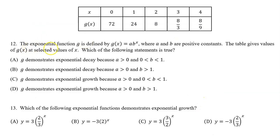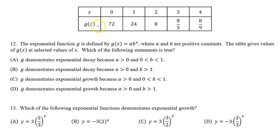Number 12. The exponential function g is defined by g(x) = a times b to the x power, where a and b are positive constants. The table gives values of g(x) at selected values of x. Which of the following statements is true? Looking over the answer choices, we need to decide if g demonstrates exponential decay or exponential growth. In all cases, a is greater than zero — we can tell because we have all positive values.